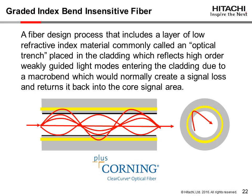Bend-insensitive fiber was created to reduce or eliminate the effects of macrobending, a common problem in applications that have a high concentration of fiber terminations such as those found in campus networking and data centers. Bend-insensitive fiber includes a layer of low-refractive index material, commonly called an optical trench, that is placed in the cladding, reflecting high-order weakly guided light modes that enter the cladding due to a macrobend — which would normally create a signal loss — but instead the trench returns the signal back into the fiber core area.